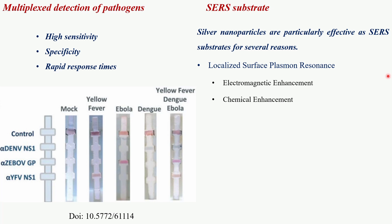There are two primary mechanisms through which silver nanoparticles enhance the Raman signal. The first is electromagnetic enhancement — the dominant mechanism — where the local electromagnetic field around the nanoparticle is amplified due to LSPR, greatly increasing the Raman signal of molecules within this enhanced field. The second is chemical enhancement, which involves charge transfer between the molecule and the metal surface, leading to an increase in Raman cross-section. Although less significant than electromagnetic enhancement, it contributes to the overall SERS effect.